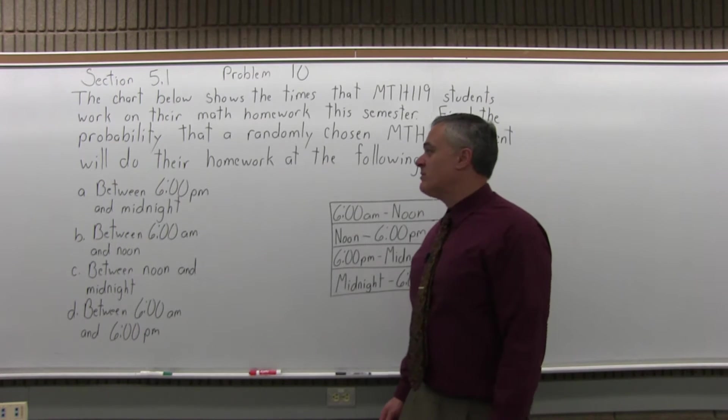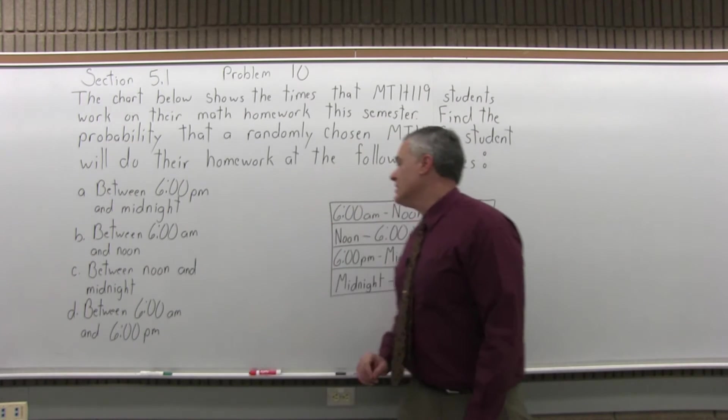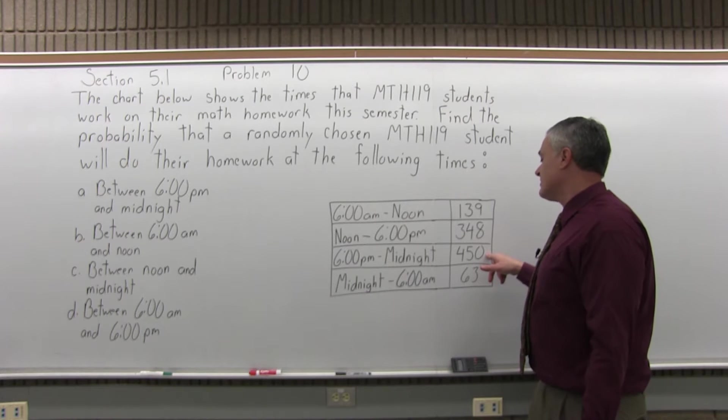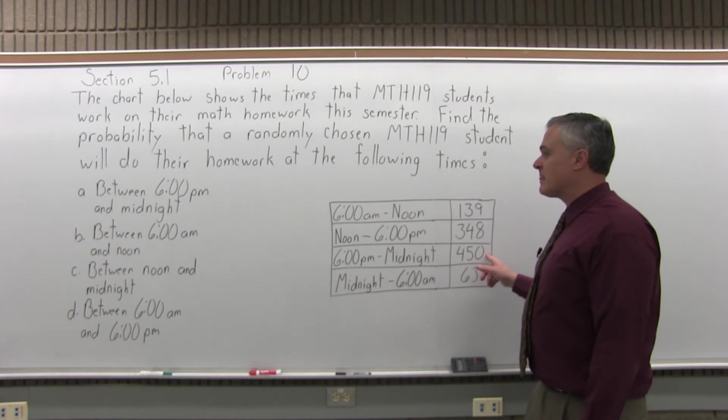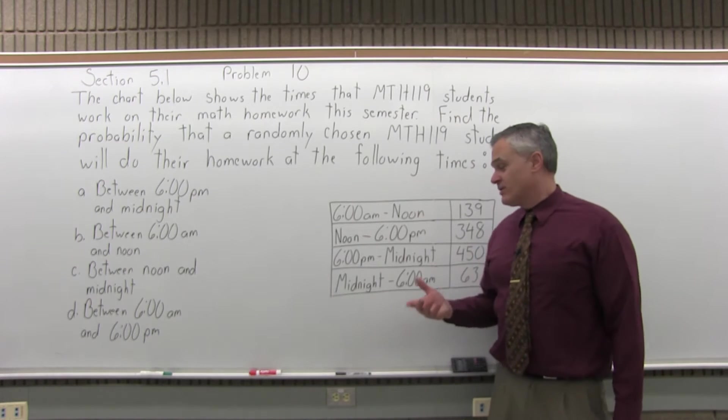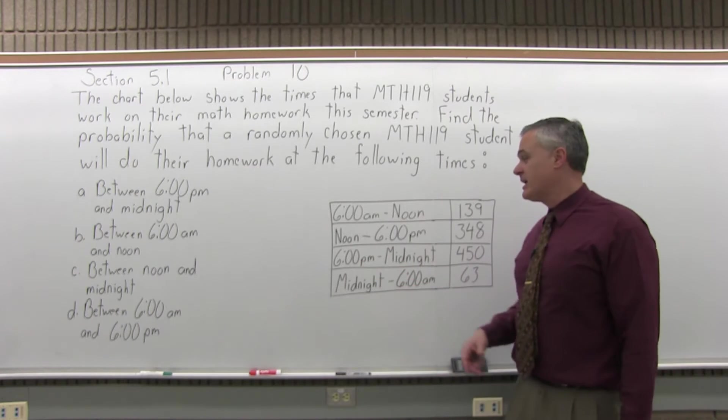The first one, Part A, says between 6 p.m. and midnight. So between 6 p.m. and midnight, there's 450 students that tend to do their work at that time. So we need to know how many students all together. I know that there's 450 that do their homework between 6 p.m. and midnight, but out of how many?